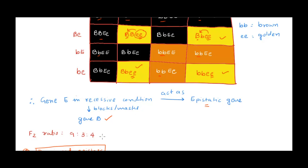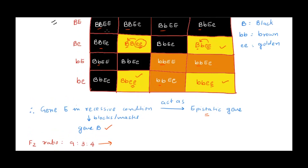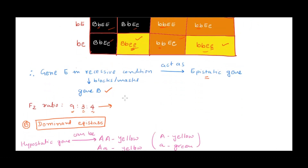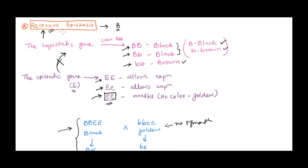The F2 ratio is very important. In case of recessive epistasis, if you count: nine black pigmented, three brown pigmented, and four golden pigmented Labradors. So the F2 ratio is 9:3:4. Recessive epistasis — remember, the epistatic gene must be in homozygous recessive condition to mask the effect of another gene.